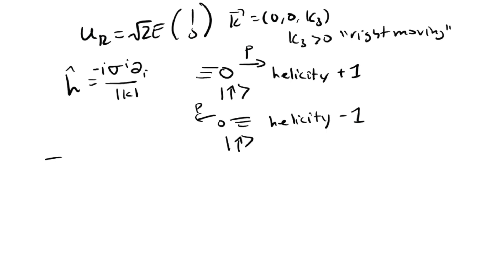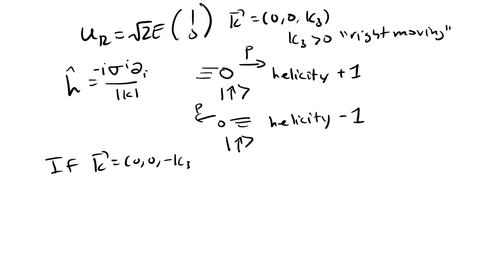Helicity is the spin of a particle projected onto its direction of momentum. Helicity is equal to chirality for massless particles since the direction of momentum is Lorentz invariant. So since the spinor will describe a right-moving particle, it must be spin up. If this particle was traveling to the left, then the particle would have to be spin down.